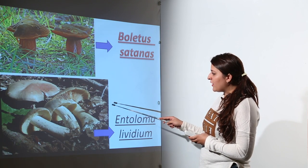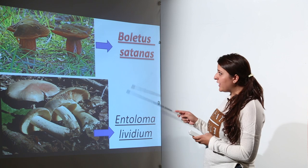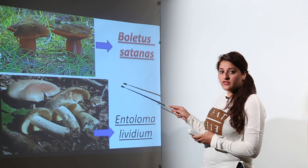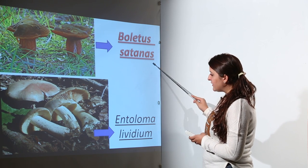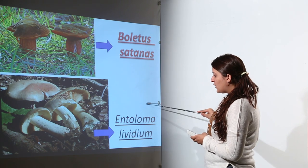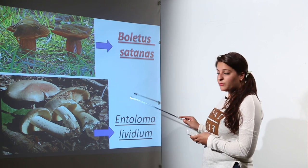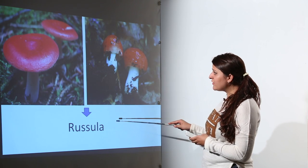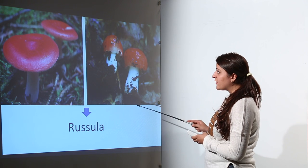This is Amanita muscaria. Moving to the next category which is also fatal: Boletus satanas and Entoloma lividum. This is Russula, again a poisonous mushroom.